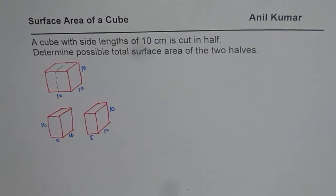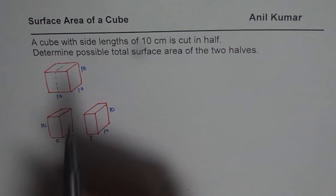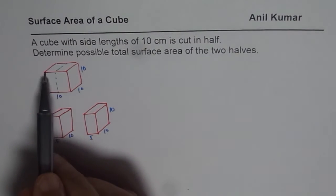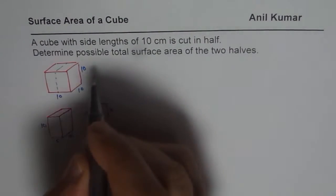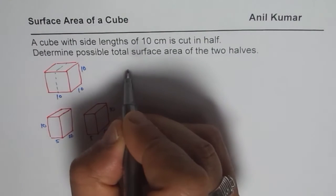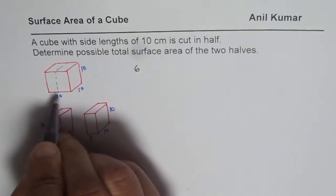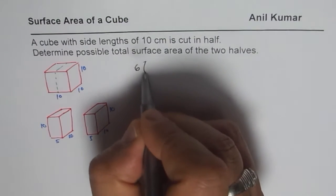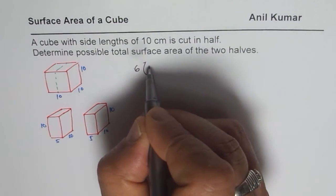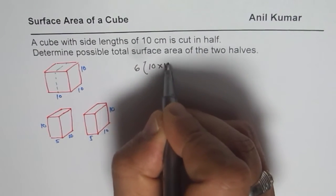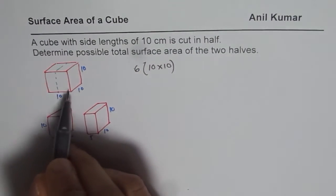Now we need to figure out what is the total surface area of the two halves. So that is the question. Initially we know that all the surfaces have same area. So to start with, the area is 10 times 10. So we have 6 times the area of each surface. 6 times 10 times 10 is the area to start with.